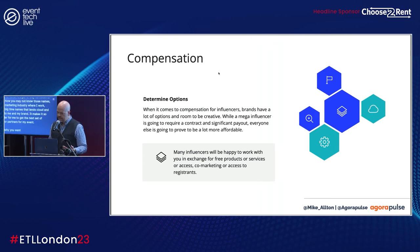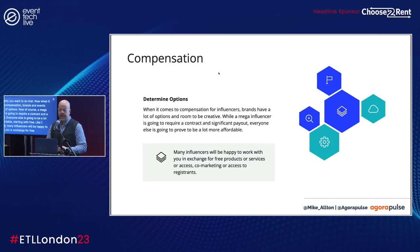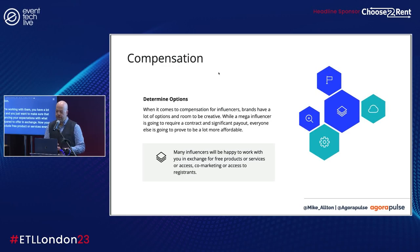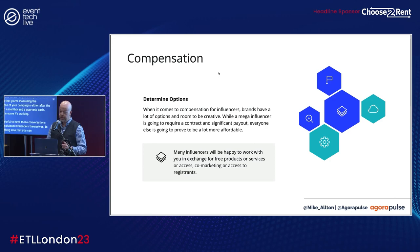When it comes to compensation, brands and events have a lot of options. A mega influencer is going to require a contract and a fat payout, but everyone else will be a lot more affordable — starting with free. Many influencers will be happy to work with you in exchange for free products or services, access, or co-marketing collaboration. Your options include free products or services, event access, upgraded access, behind-the-scenes access to key people, corporate swag and gifts, affiliate payments, increased affiliate payments, ongoing payments, and one-time payments. Whatever you set up, make sure you're measuring the performance of your campaigns after the event or on a monthly and quarterly basis. Don't just assume it's working. Have conversations with individual influencers about what else you can do to help them be more vocal advocates for your brand or events.